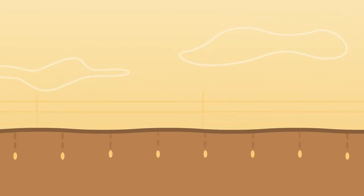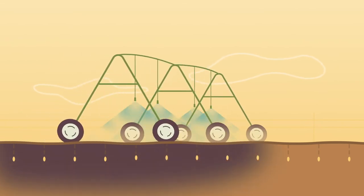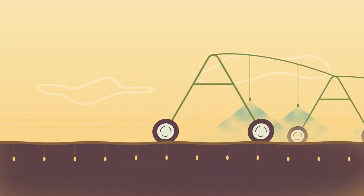Now we set up the irrigation. Advanced technology ensures that the seeds get just the right amount of water and fertilizer that they need. And then it's time to wait.